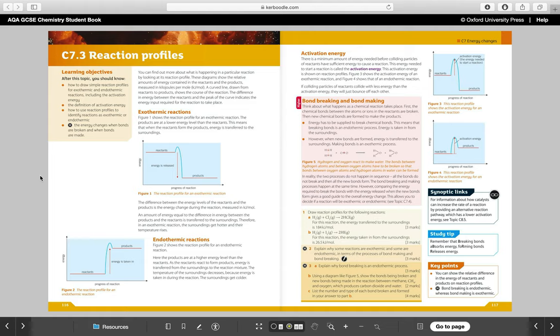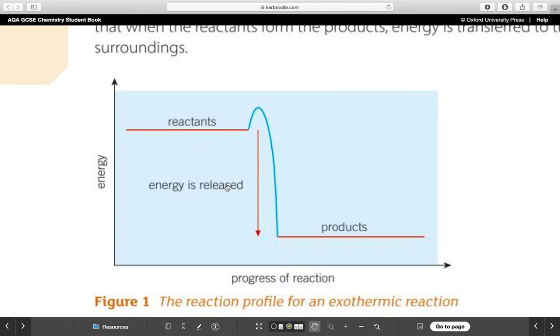For example, the self-heating coffee cans or the hand warmers for exothermic, and then for endothermic, things like sports injury packs. In this part, what we're looking at is how we can represent endothermic and exothermic reactions graphically. I just want to zoom in and show you these different diagrams and just talk through them with you very quickly.